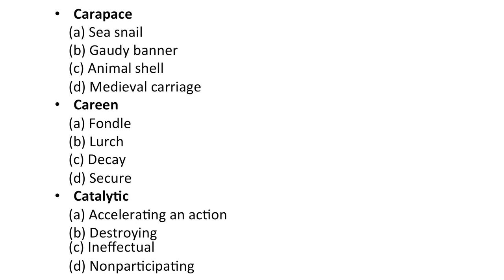Next, carapace — is it A — a sea snail, B — gaudy banner, C — animal shell, D — medieval carriage?